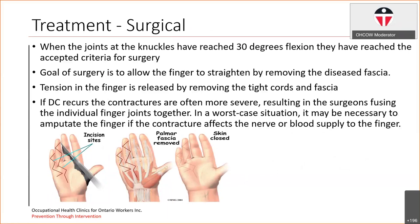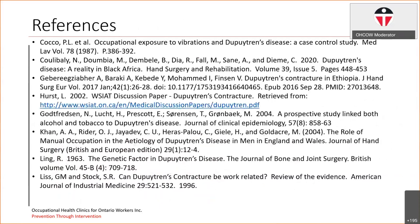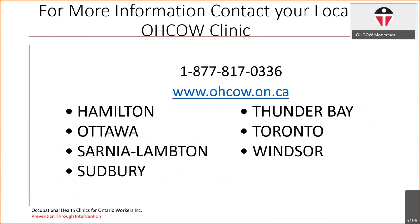For surgical options, when the joint at the knuckle reaches about 30 degrees of flexion, the criteria for surgery have been reached. The goal of the surgery is to allow the finger to straighten by removing the diseased fascia — the tension in the finger is released by removing the tight cords. If the contracture recurs, the contractions are often more severe, resulting in the surgeon either having to fuse the individual finger joints together, or in a worst-case situation, it may become necessary to amputate the fingers if the contracture affects blood or nerve supply to the ends of the digits. That brings us to the end of our presentation.